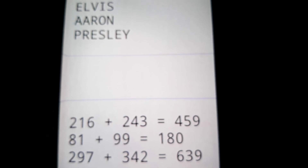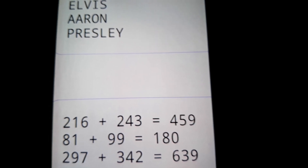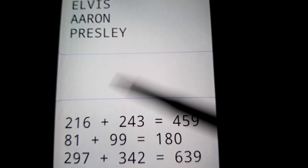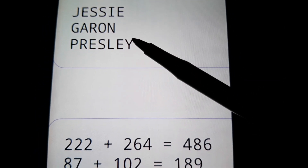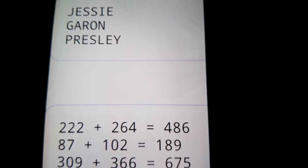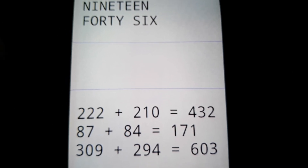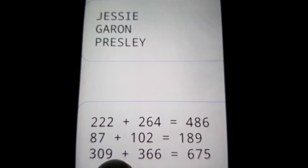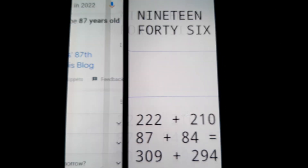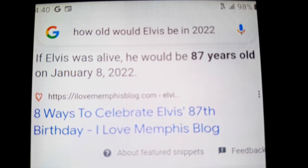Elvis Aaron Presley — his name equals 216. This is how it's spelled on his tombstone. Everything is about the 2-2-2 and the 2-1-6. What's the chance that his twin is 2-2-2 and Elvis is the 2-1-6? And 1946 equaling the same as his dead twin — which all connects to this year where he turns 87 in 2022.